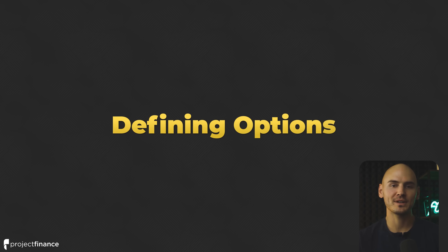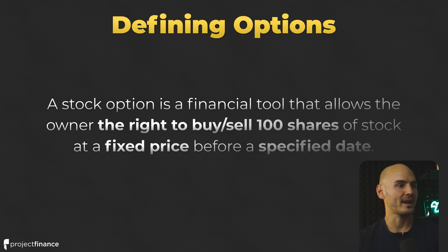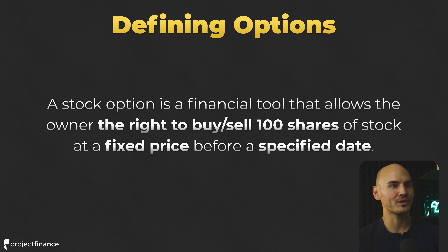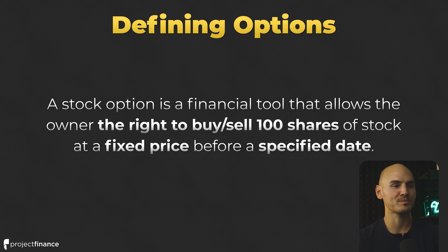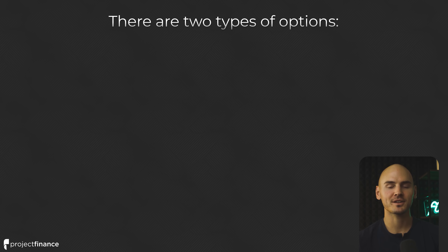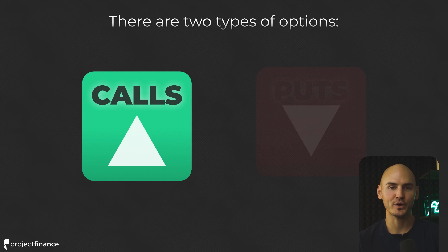What are options? The textbook definition for what a stock option is: a financial tool that allows the owner the right to buy or sell 100 shares of stock at a fixed price before a specific date. This is all going to make a lot more sense as we continue. There are two types of options: calls and puts.